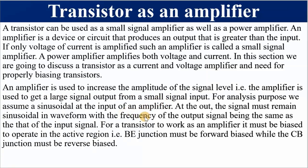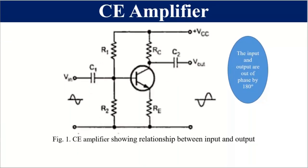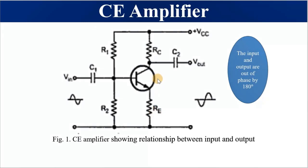The output signal must maintain the same frequency as the input. For a common emitter connected transistor, the phase may differ. For a transistor to operate as an amplifier, it must be properly biased so that it operates in the active region — meaning the base-emitter junction must be forward biased while the collector-base junction must be reverse biased. This is a single stage transistor amplifier: one input, one output, and one BJT transistor. The transistor is connected in common emitter configuration — hence common emitter amplifier.